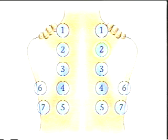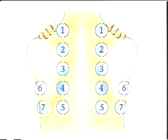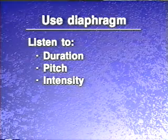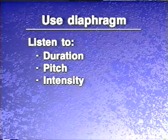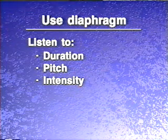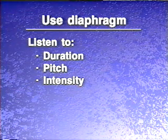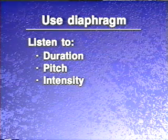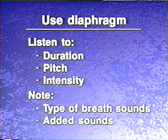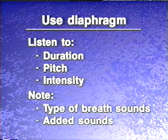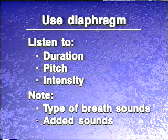To auscultate the posterior thorax, begin at the apices and proceed downward, moving systematically from side to side and comparing the sounds in symmetrical areas. Using the diaphragm of the stethoscope, listen to at least one entire breathing cycle at each location. Listen to the duration, pitch, and intensity of the inspiratory and expiratory sounds. Decide what type of breath sounds you're hearing and note any added sounds.